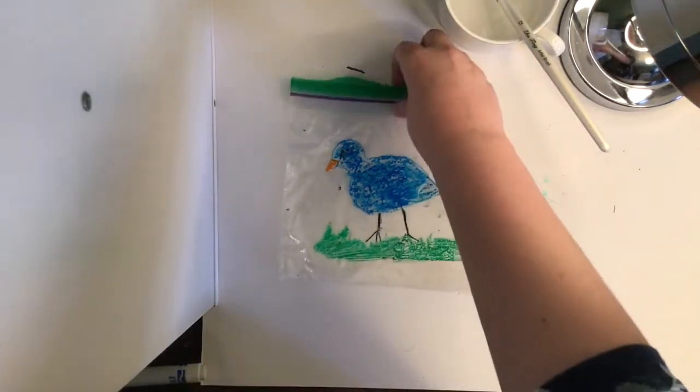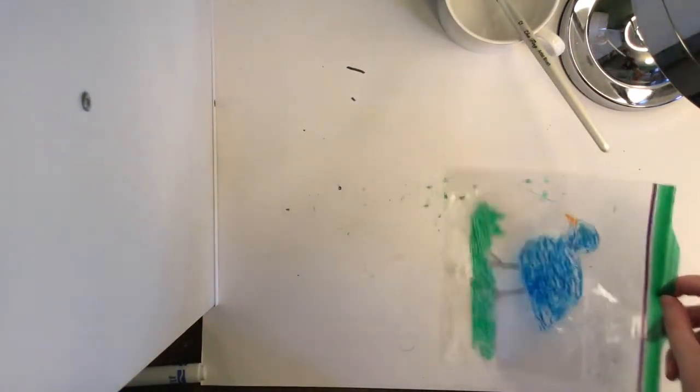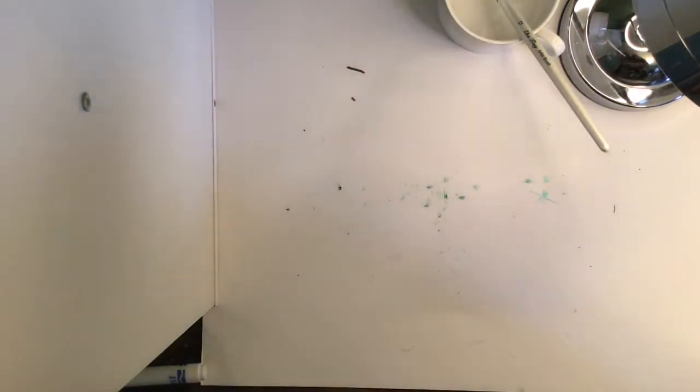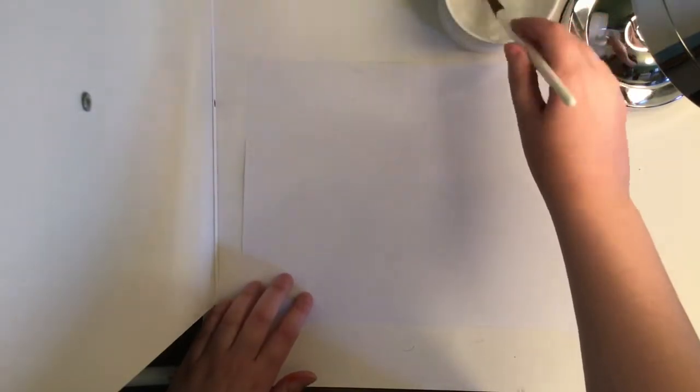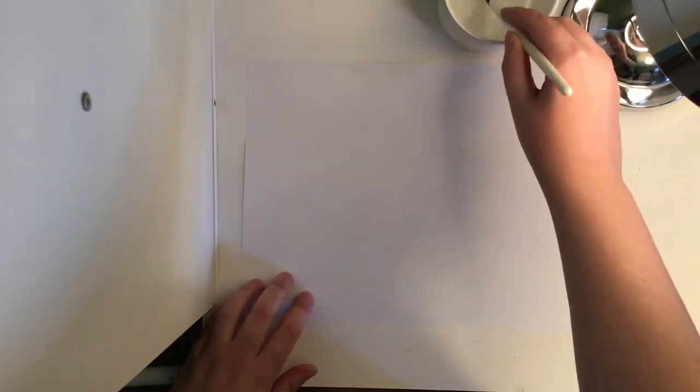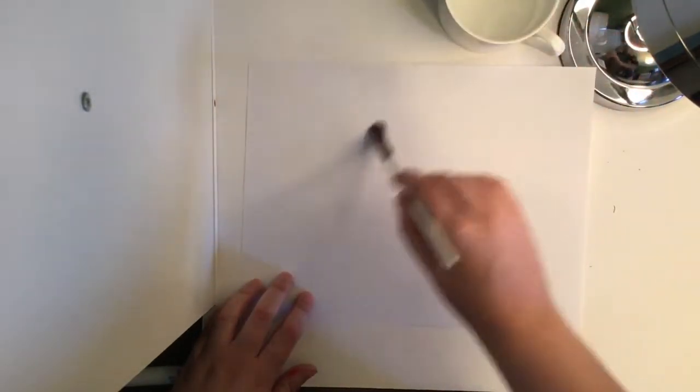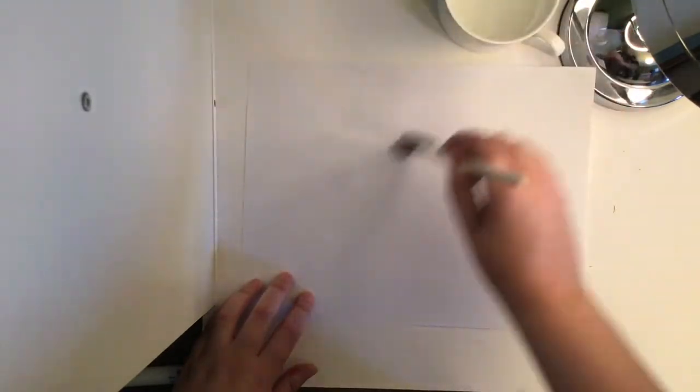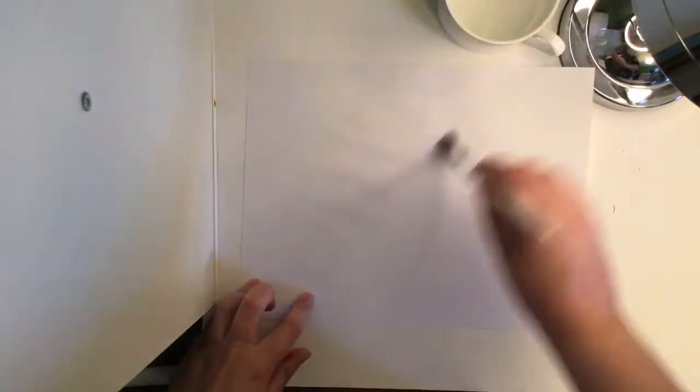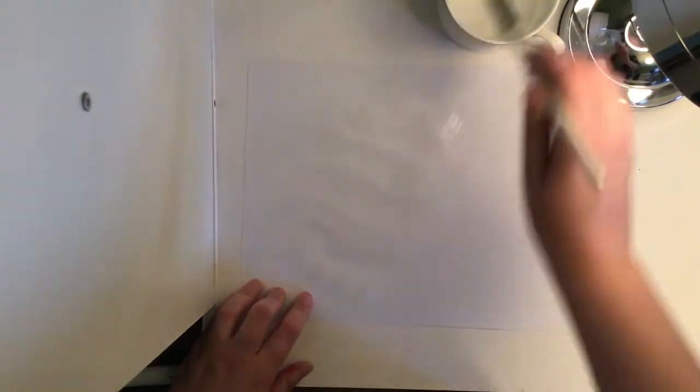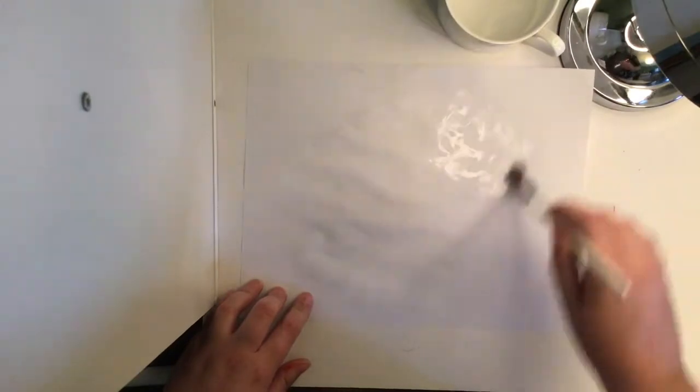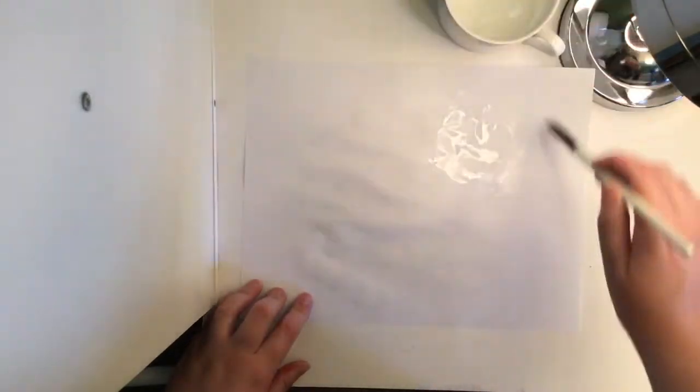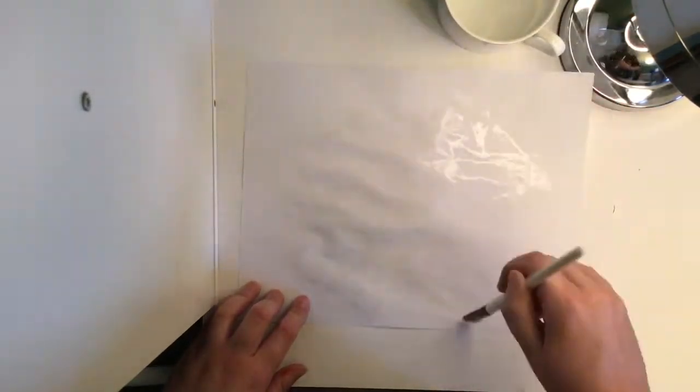I'm going to set my little baggie aside, being really careful not to smudge anything. I'm going to pick up my piece of paper here, and I'm going to take my brush with my water on it, and I'm just going to wet the paper. Just a little thin layer of water. You don't want big puddles. You just want enough that the paper is a little bit saturated. There we go.